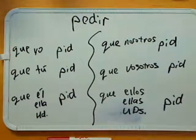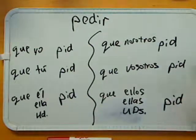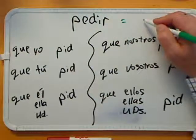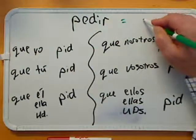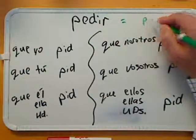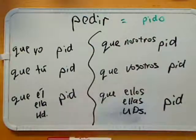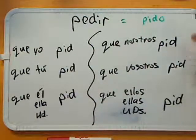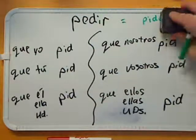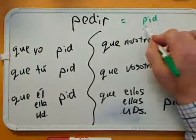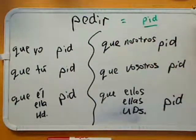Now, remember that for the present tense subjunctive, what we need is the yo form of the present tense indicative. For pedir, that is yo pido. Then we knock off the O, which gives us the stem P-I-D.